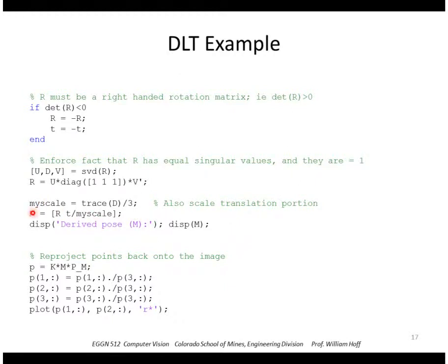So the resulting properly scaled R and T is given here as M. So I'm going to just reproject those points back onto the image and that's going to be in color red here.